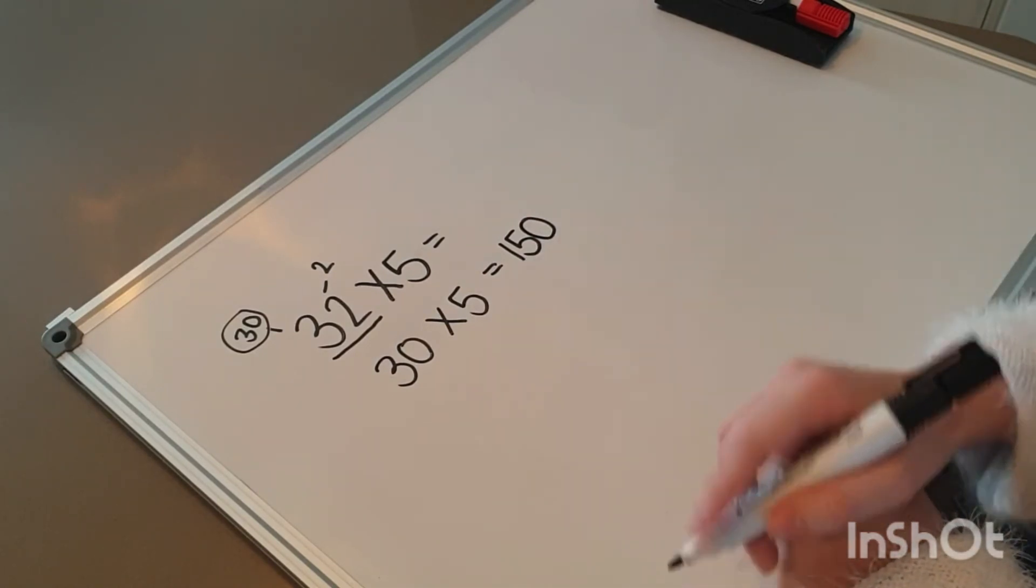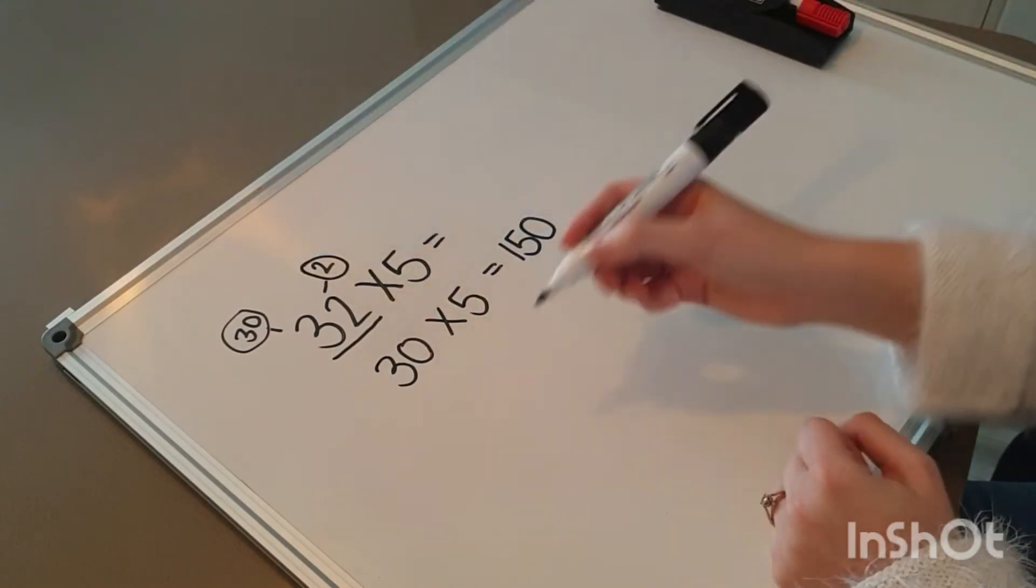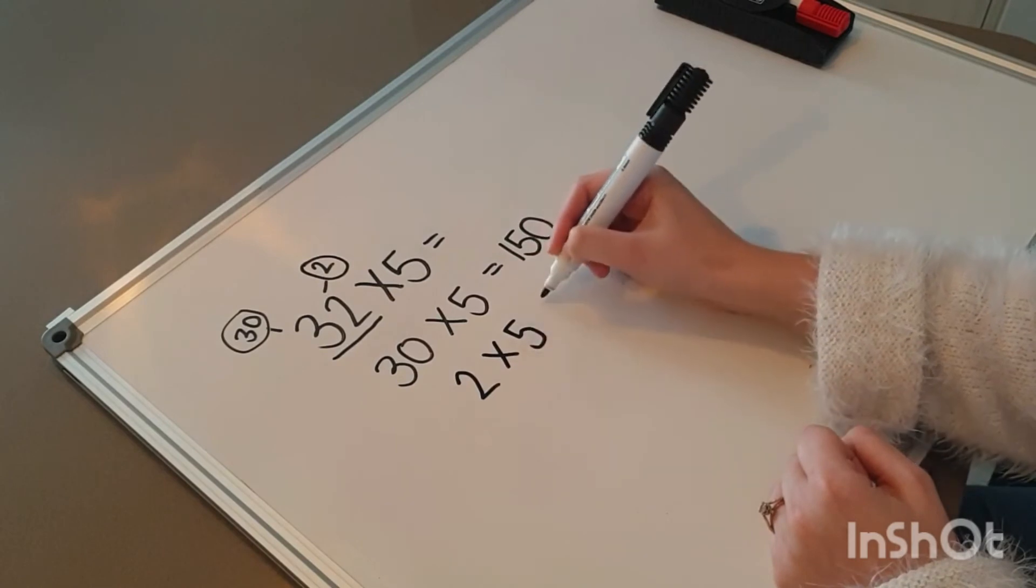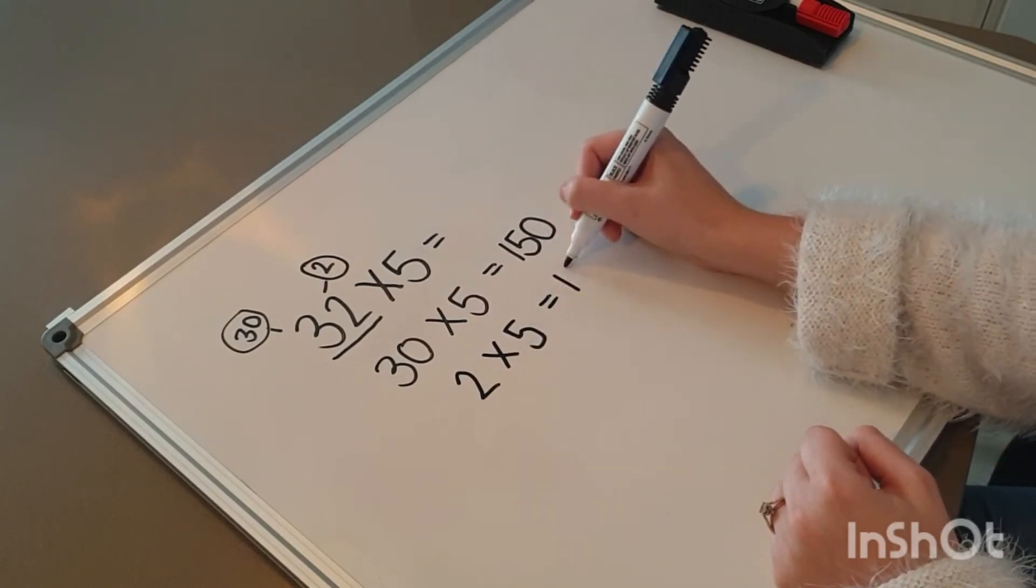Okay, now I must multiply with my units. My units is 2, so my sum is 2 times 5. And that is an easy one, 10.